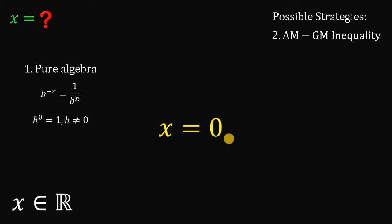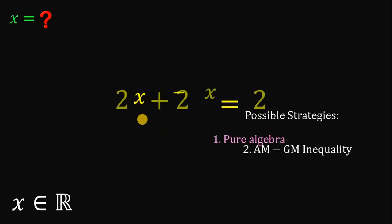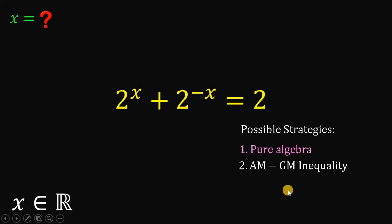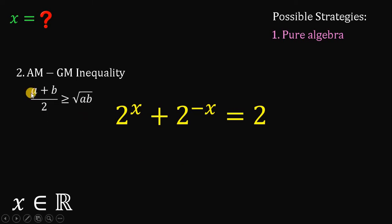Therefore, using our first strategy — pure algebra — we get that the answer must be x equals 0. Now let's use the second strategy, which is the AM-GM inequality. According to the AM-GM inequality, the arithmetic mean of two positive numbers must be greater than or equal to its geometric mean.